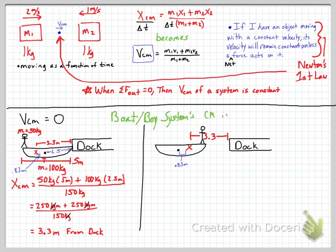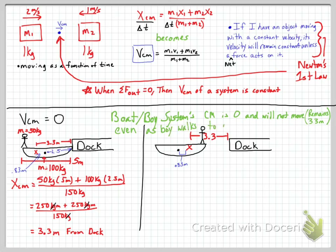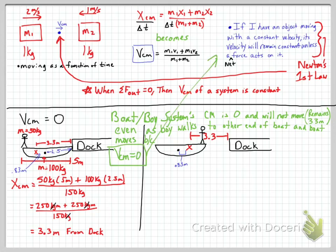The boat-buoy system's velocity of center of mass is zero — it is not moving and will not move. Even if the person starts moving along the boat, the system objects will react in opposite directions, canceling each other's motion, maintaining a velocity of center of mass of zero. This is all because of Newton's first law of motion.